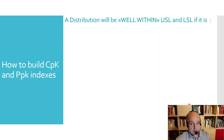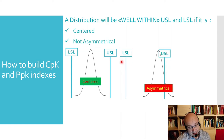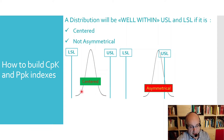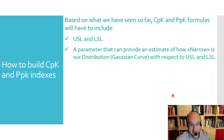A distribution will also be well within USL and LSL if it is centered. If my distribution is well centered with respect to the two limits, I can be very confident that future productions will have all bags within specifications. But if I obtain an asymmetrical distribution, I will not be very confident about future productions. Based on what we have seen so far, CPK and PPK formulas will have to include USL and LSL, and a parameter estimating how narrow is our distribution with respect to USL and LSL.